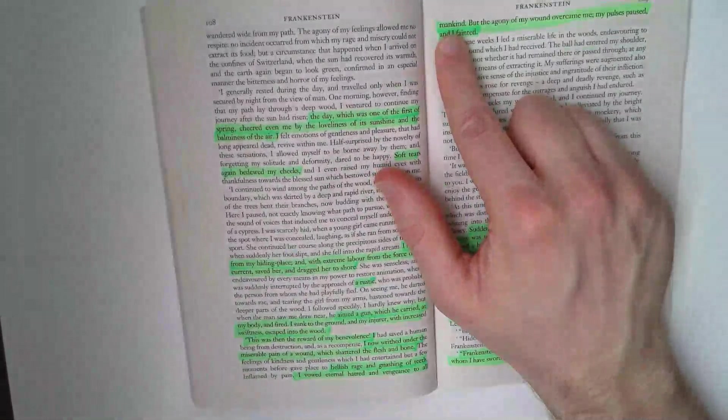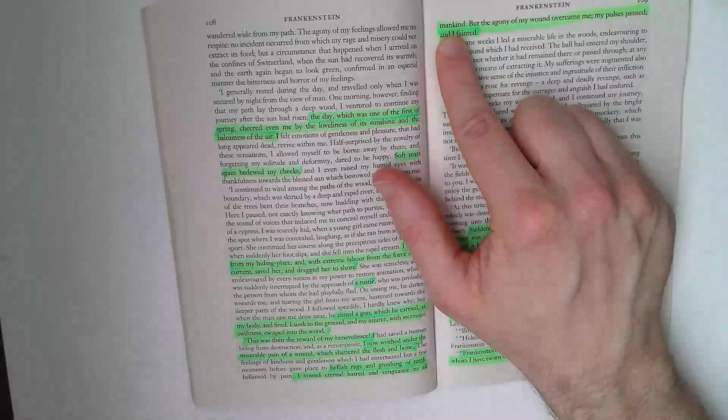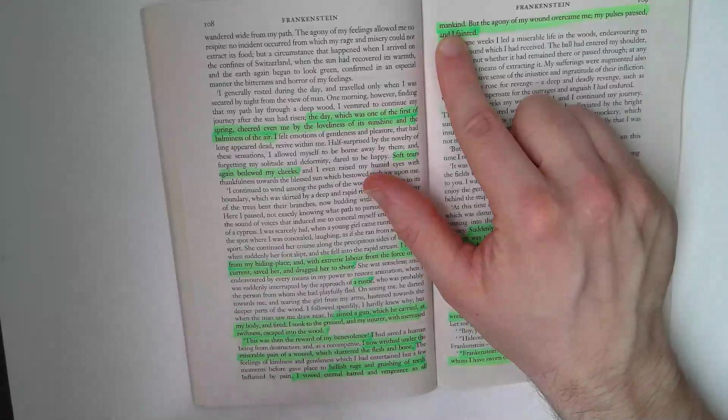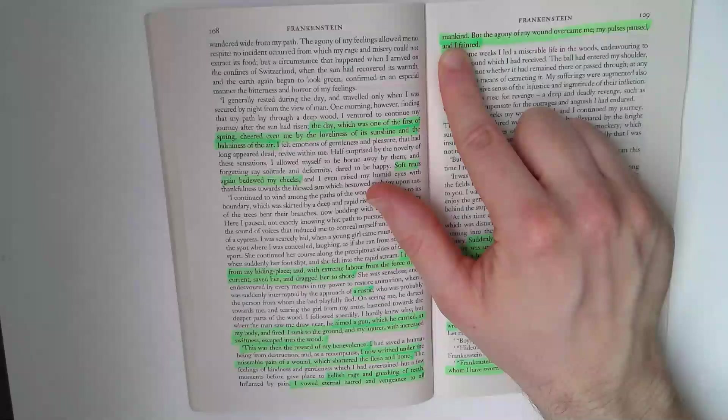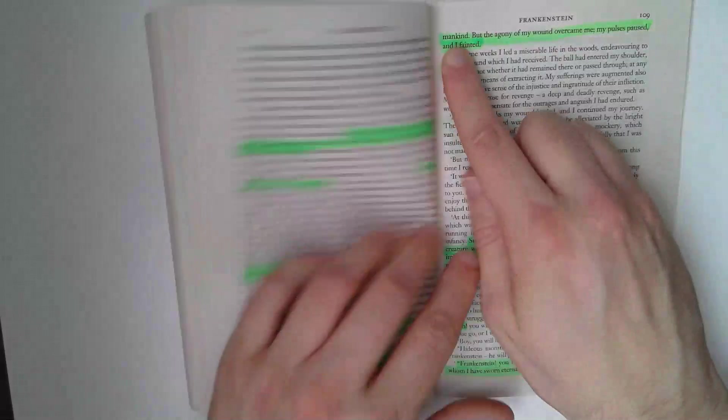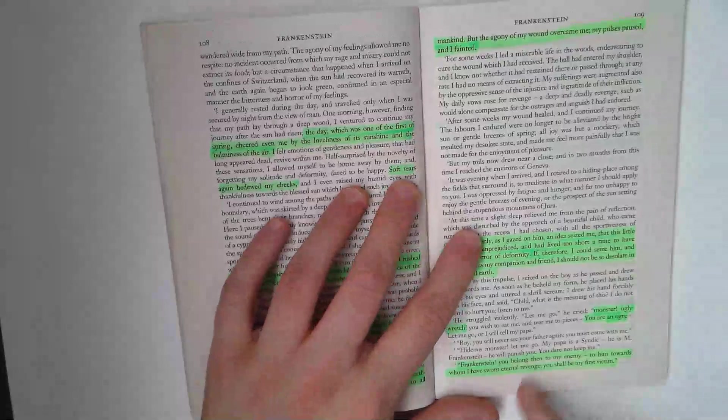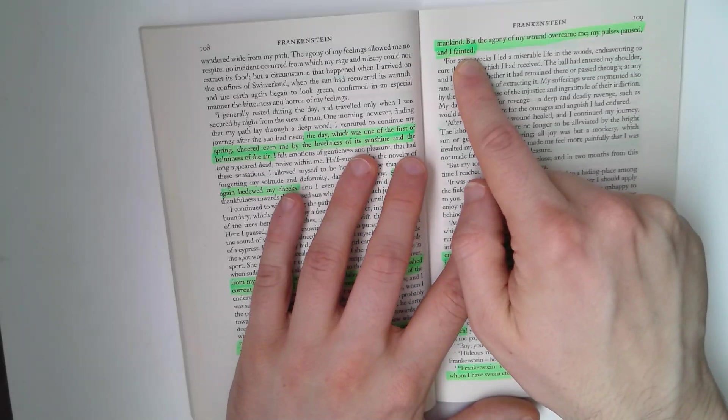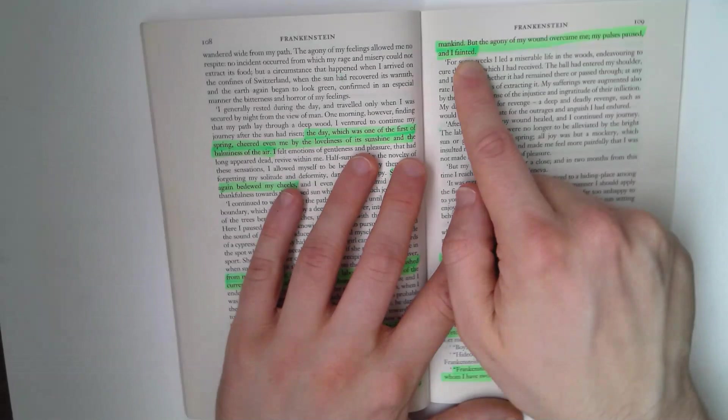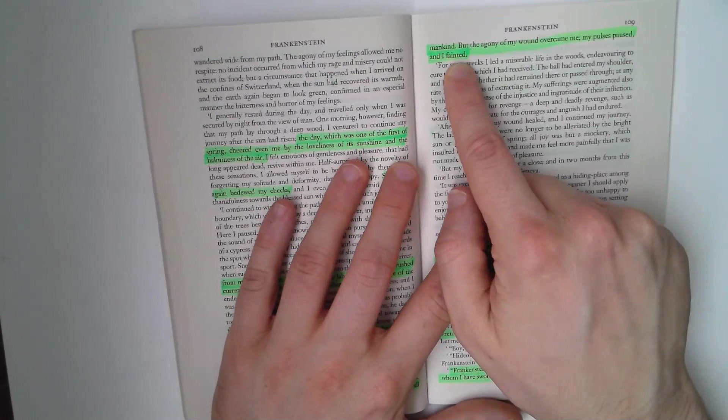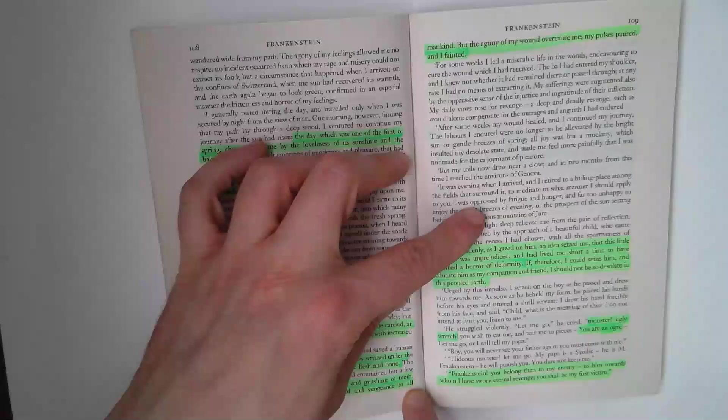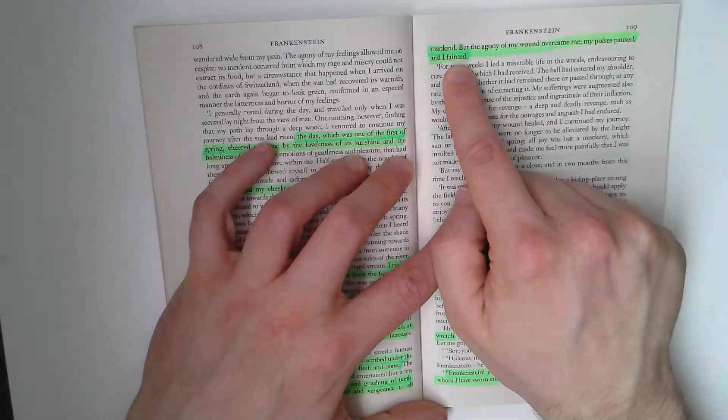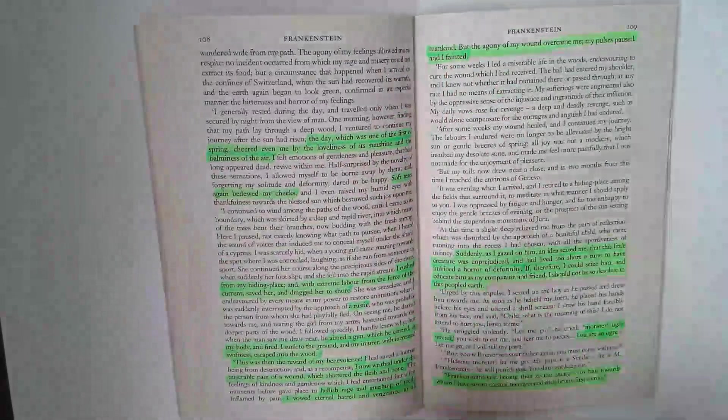And I vowed eternal hatred and vengeance to all mankind. It's interesting that we could take the creature on surface level as this is now the moment where he's gone fully savage. He's given way to the darkness within his soul. We could take him on that surface value because within less than a page he's murdered William. But it's interesting that he says this. Is this not potentially a hyperbolic exclamation? Oh, damn you! I'm going to kill all mankind. And he faints in the same way that Victor faints. And it's a fascinating parallel between the two characters.